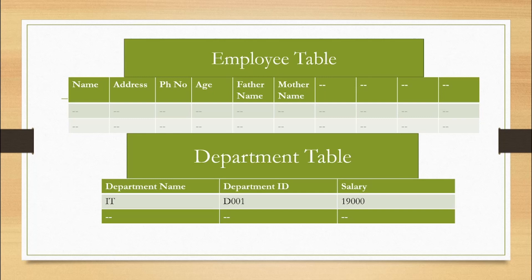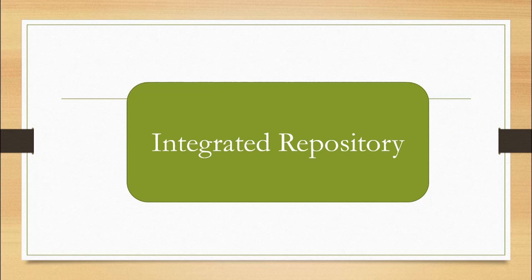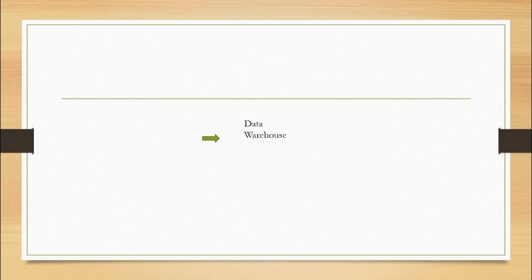This employee table and department table are actually subjects. By this subject you can easily determine that yes, this table contains the details of the employee, and the other table contains the details of the department. This has to be maintained by the properties of DBMS and data warehouse. You can easily say which table contains what kind of data.